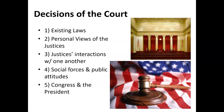So the decisions of the court. There are five things that you need to consider when our Supreme Court makes a decision. One: the existing laws. Two: the personal views of the justices themselves — even though they're supposed to interpret the law, those personal views can come into it. Three: the interactions between the justices themselves. Four: social forces and public attitude, probably the most important outside influence. And five: the role Congress and the President play in the decisions of the court.